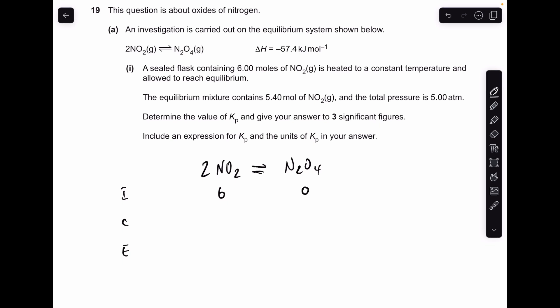Okay, so make a start. I call this type of calculation an ICE calculation, so initial change and equilibrium. The first thing I'm going to do is populate with the initial moles of each chemical. So we've got 6 moles of NO2 at the start, and obviously we won't have any product, any N2O4.